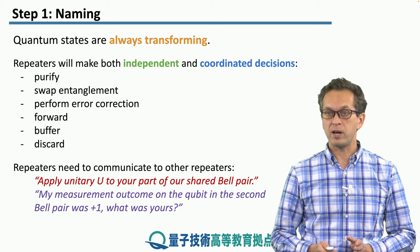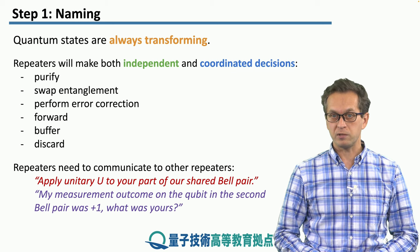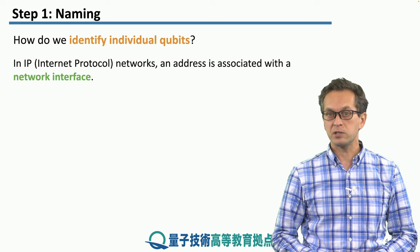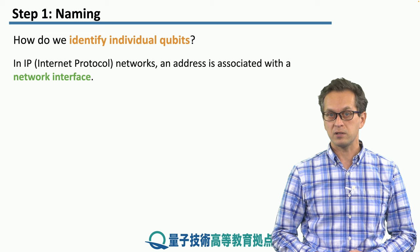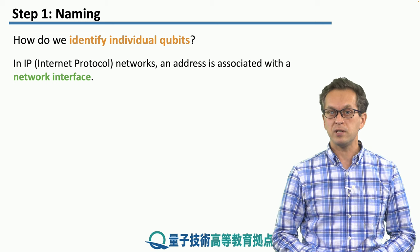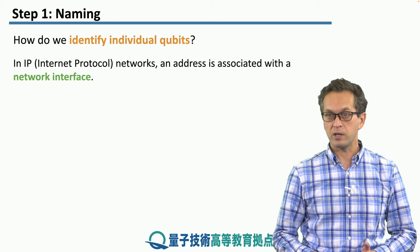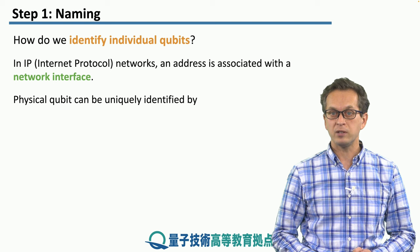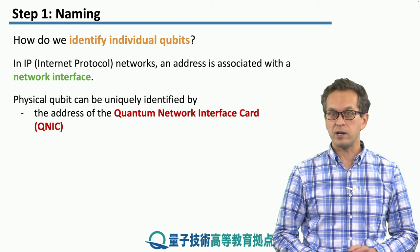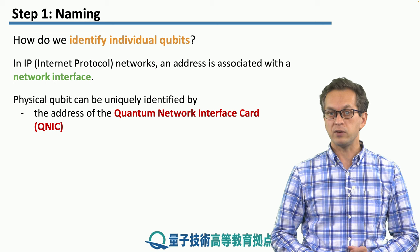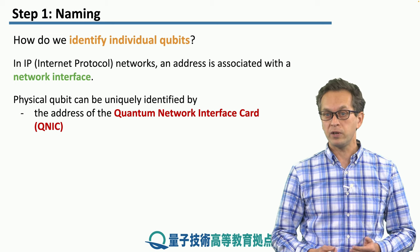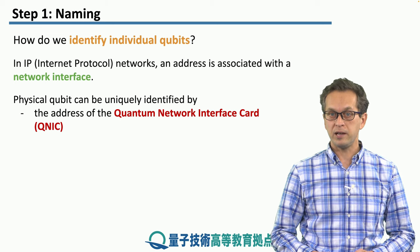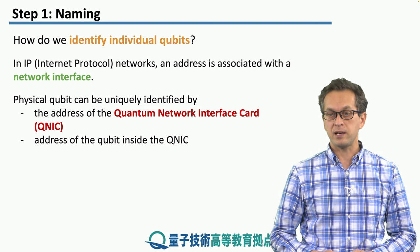So repeaters need a way of identifying individual qubits. How do we do that? We can look and take inspiration from classical networks. In IP networks, an address is associated with a network interface. So we can try and do something similar in quantum networks. We can say that a physical qubit can be uniquely identified by the address of the quantum network interface card, or QNIC. This is the equivalent of the classical network interface card.